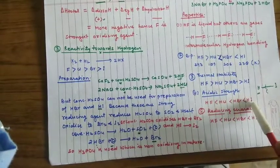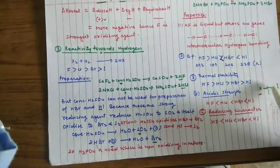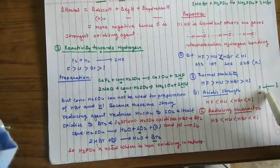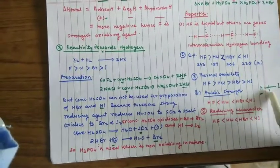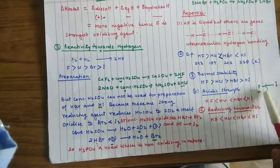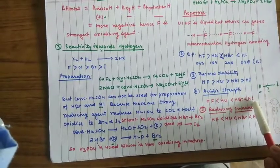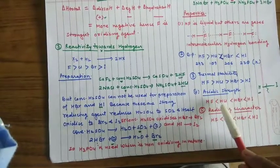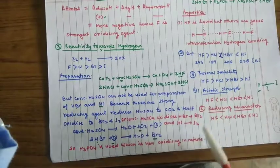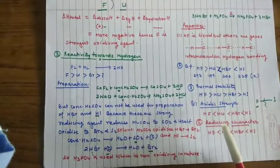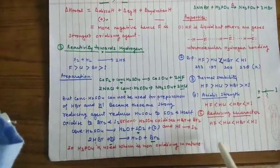If we talk about acidic strength, it will increase down the group because HI bond can dissociate easily because it is longer in water to give H+. So HI is a stronger acid than HBr, than HCl and HF is the weakest acid of this family, hydrogen halide.